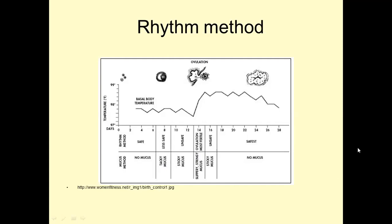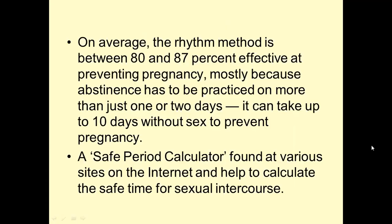The rhythm method — counting the days — is on average between 80 and 87% effective at preventing pregnancy, mostly because abstinence has to be practiced on more than just one or two days; it can take up to 10 days without sex to prevent pregnancy, and some couples can't cope with that.